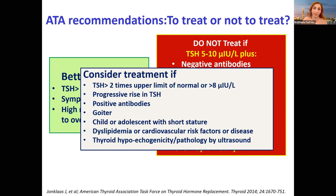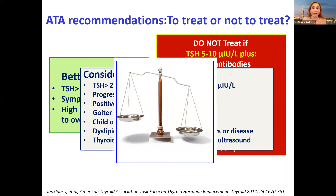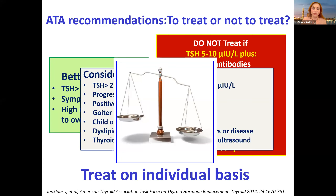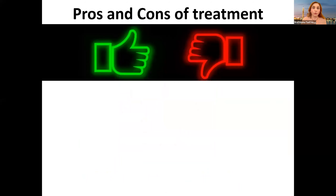Consider treatment for: progressive rise in TSH, positive antibodies, goiter, child or adolescent with short stature, dyslipidemia or cardiovascular risk factors, or thyroid pathology by ultrasound. But here you only 'consider' — it's a really difficult decision. We have to balance the pros and cons and treat on an individual basis.